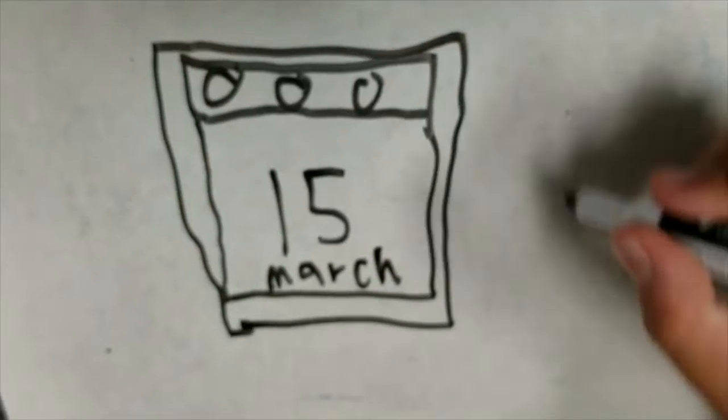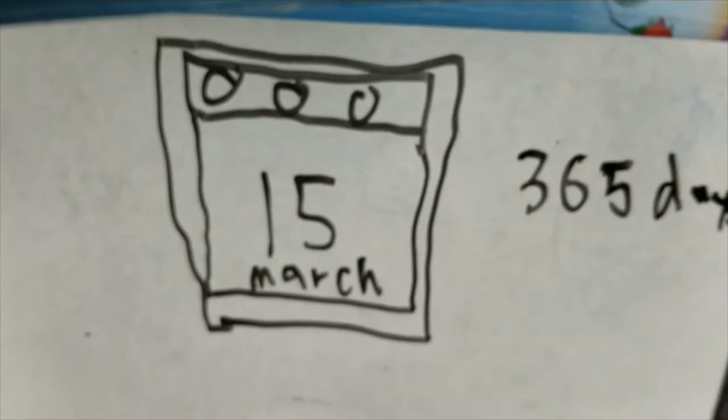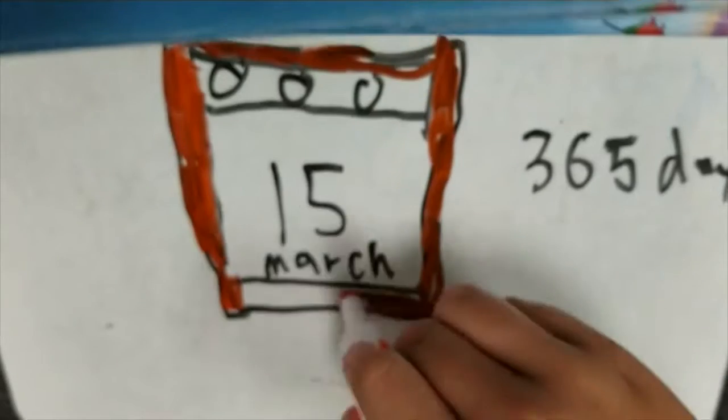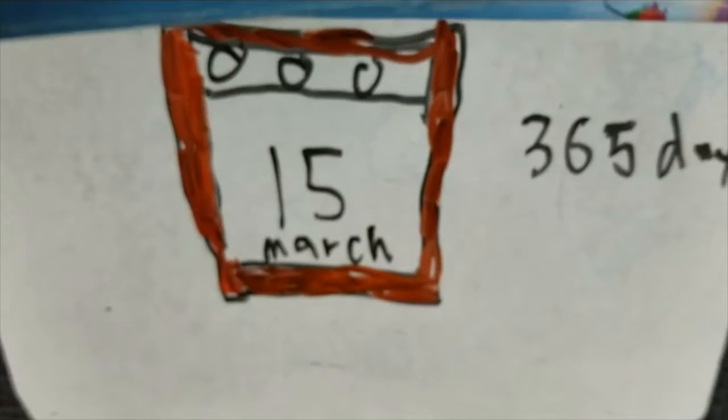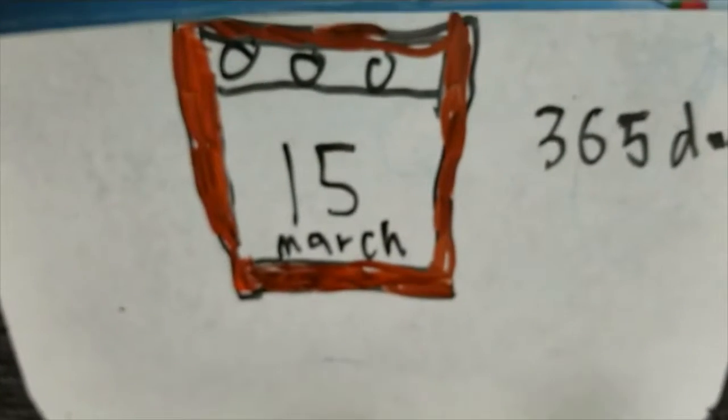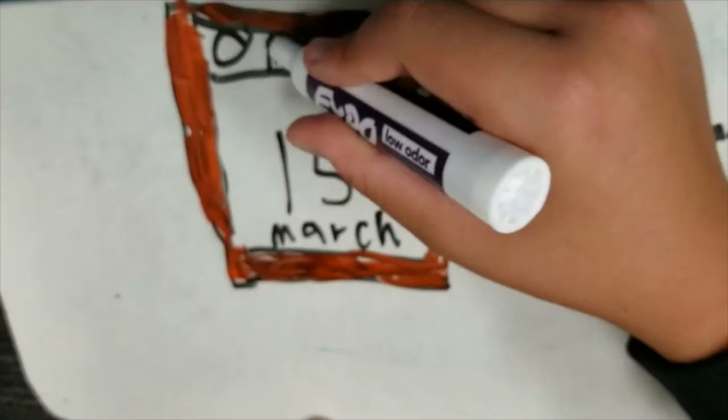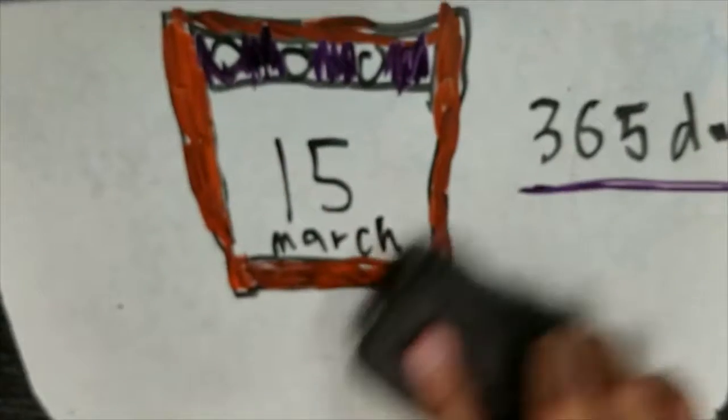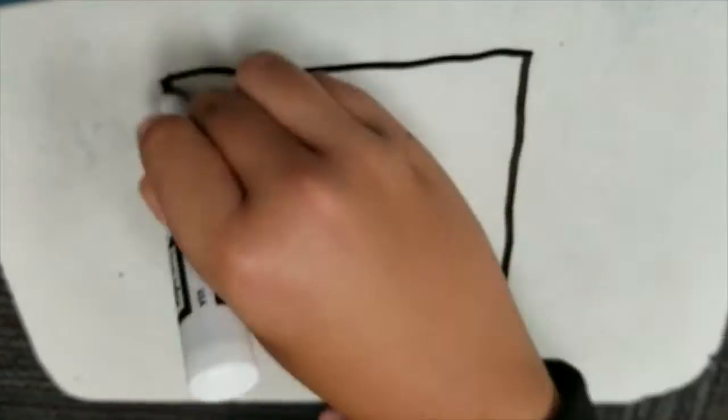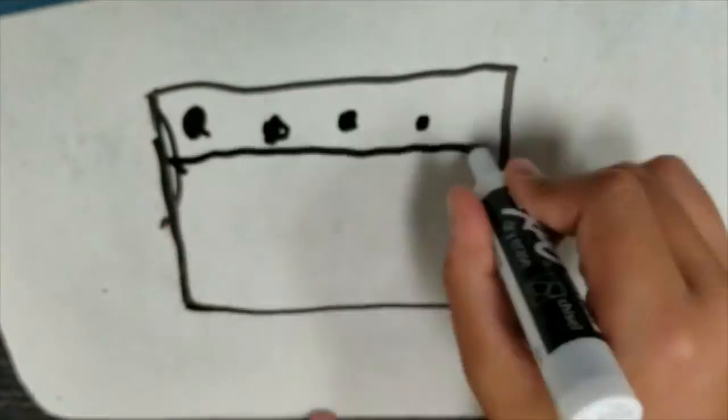The Mayans used calendars and knowledge of seasons to help grow more food than needed. Mayans used symbols to represent numbers. Contrary to popular belief, the Mayans did not predict the world would end in 2012, but calculated the resetting of their calendars based on the movements of the Sun and Jupiter. There are 365 days in a Mayan calendar.